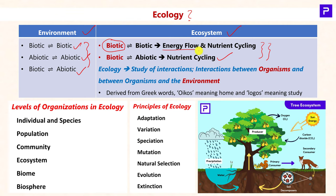Coming to energy flow or trophic levels and nutrient cycling or biogeochemical cycling — we will be seeing these in future chapters. So what is ecology? Ecology is the scientific study of the interactions taking place within an ecosystem: interactions between two organisms (biotic-biotic), and interactions between organisms and the environment (biotic-abiotic).